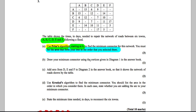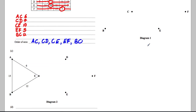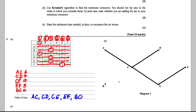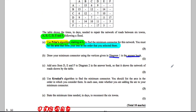The question then says to draw the minimum connector using the vertices given in diagram 1. We fill in the arcs: A to C is 6, C to D is 7, C to E is 10, E to F is 5, and B to C is 12. That completes the minimum connector for one mark.